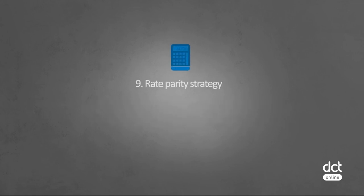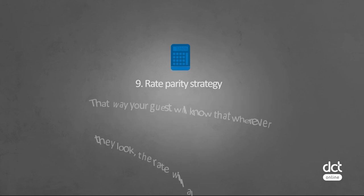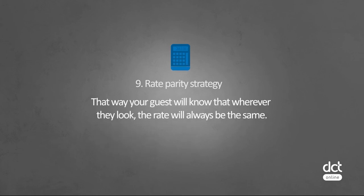Nine, rate parity strategy. This strategy focuses on keeping hotel rates the same across all distribution channels. That way, a guest will know that whenever they book, the rate will always be the same.